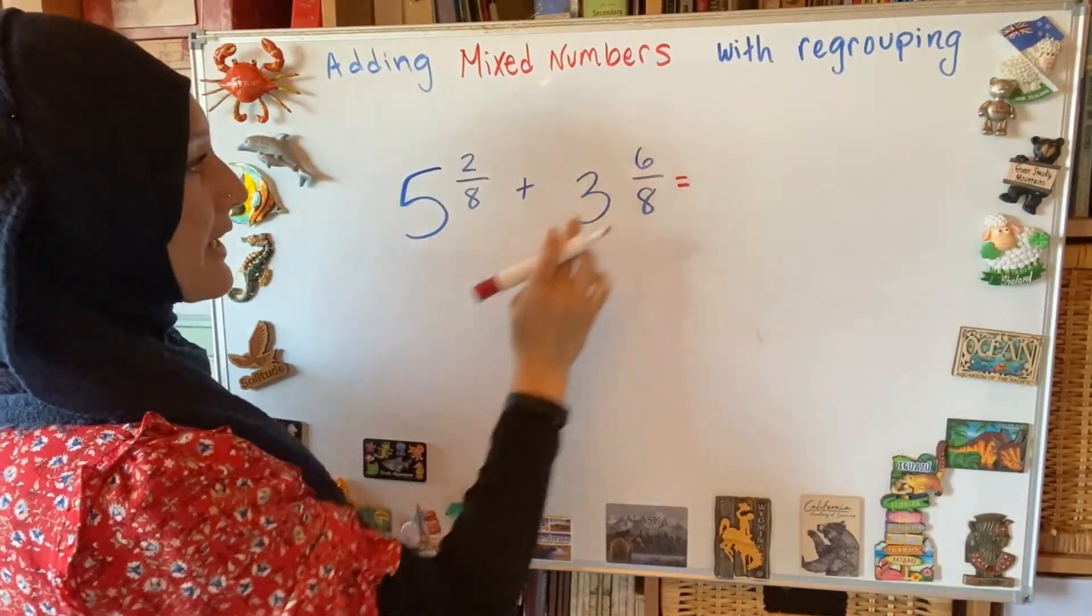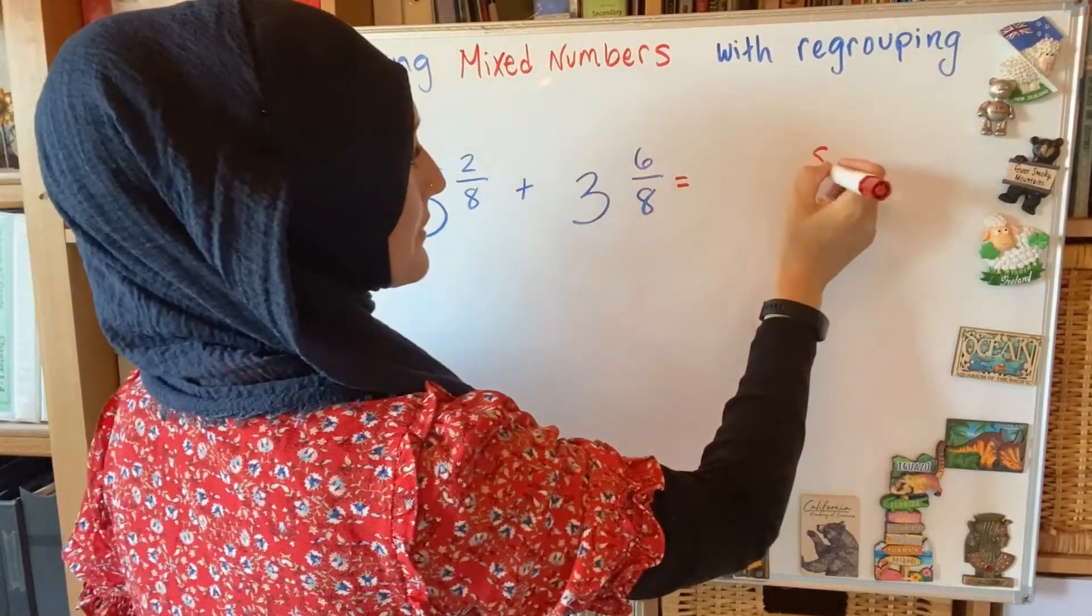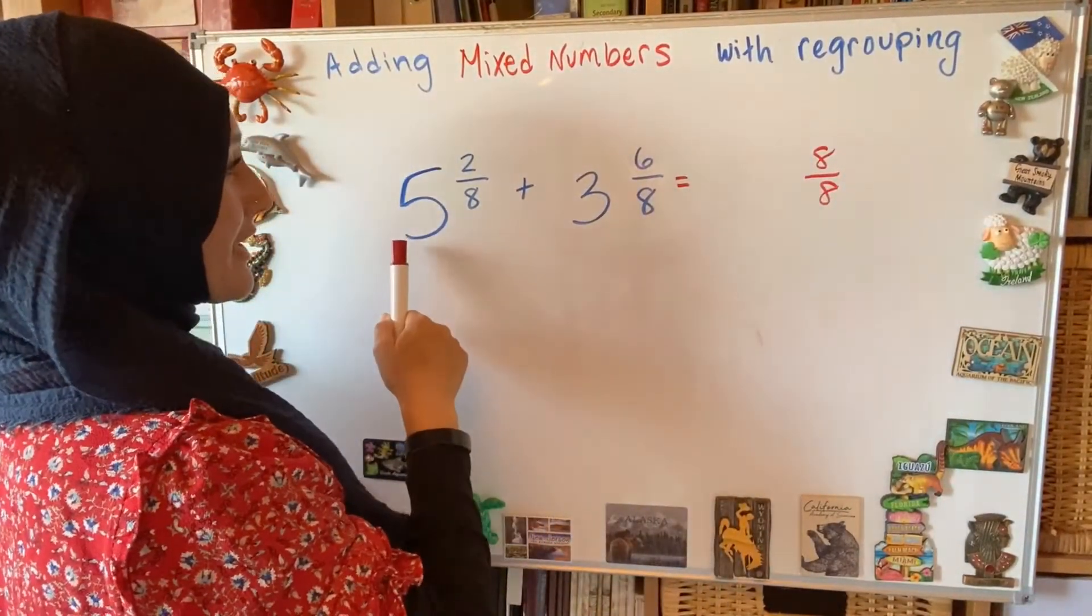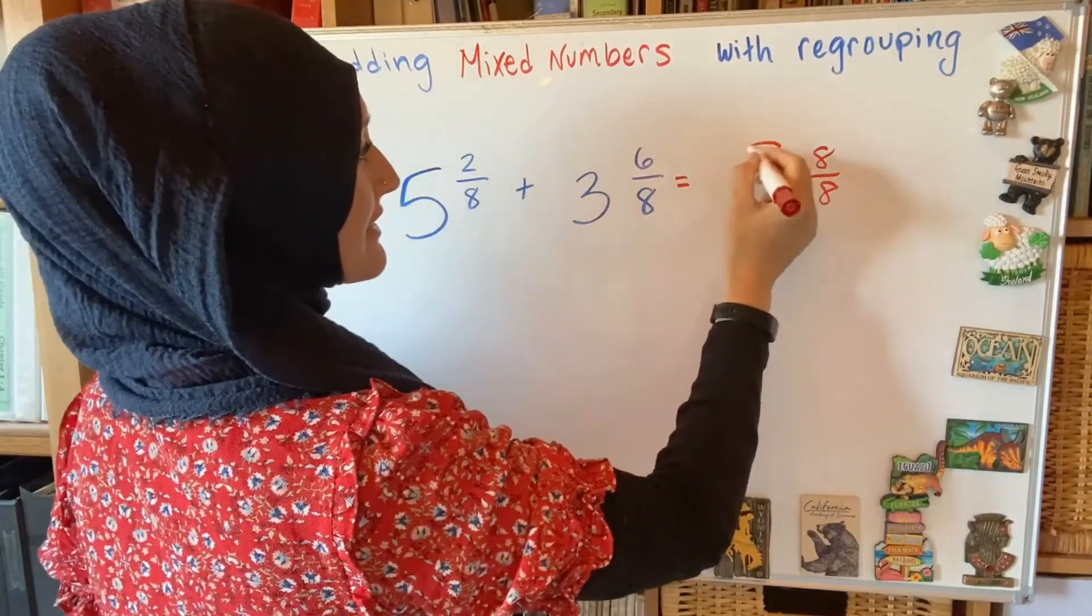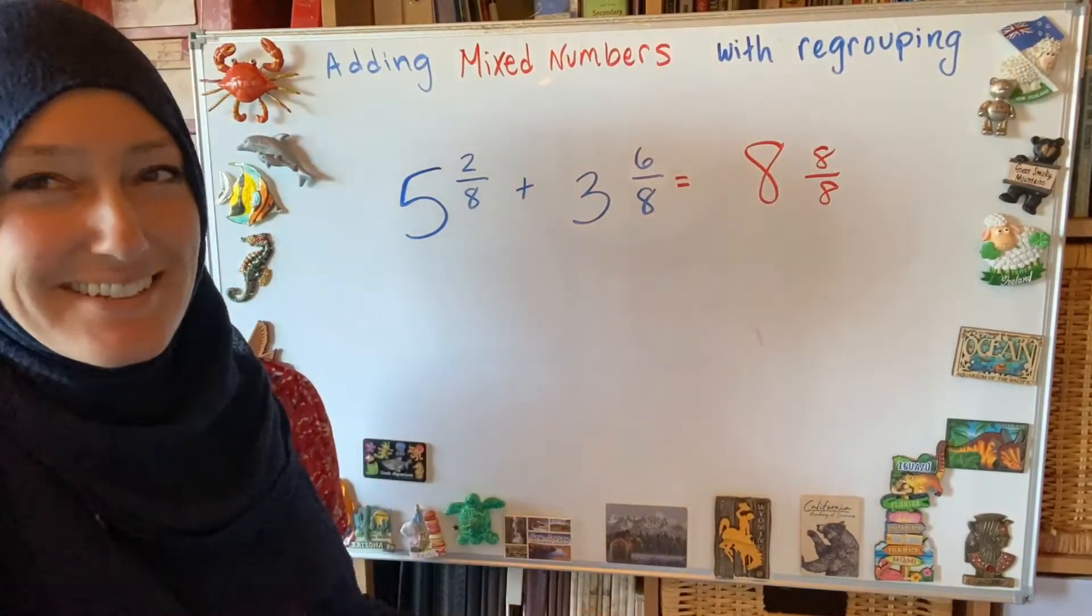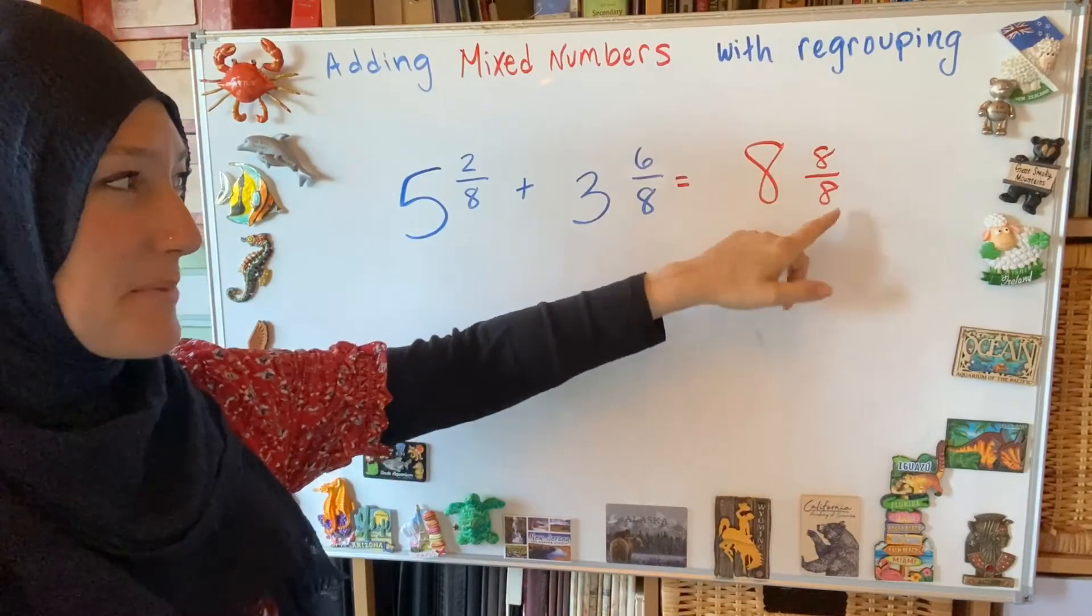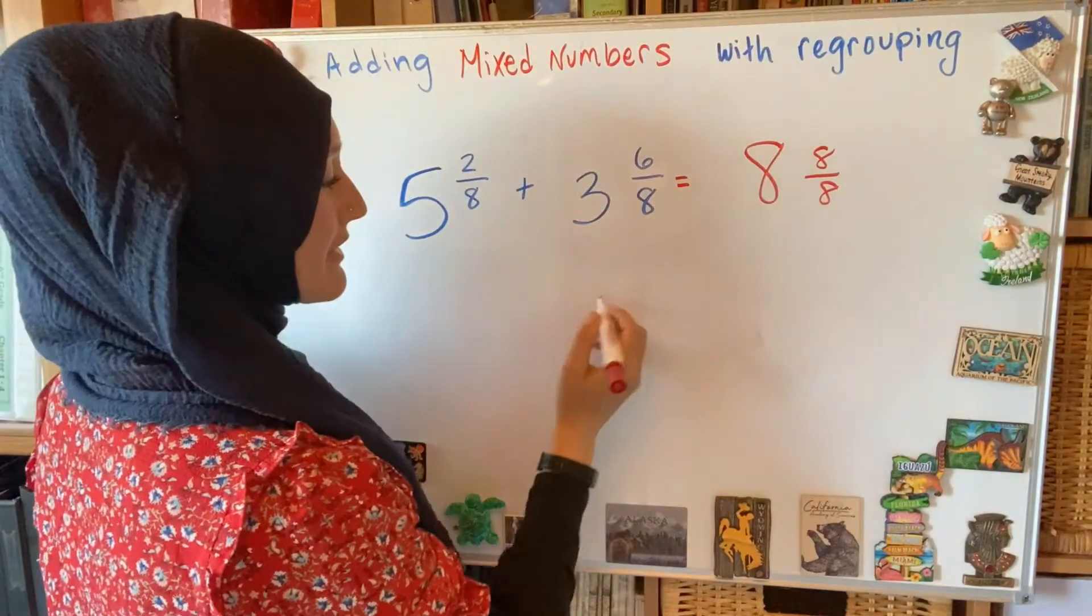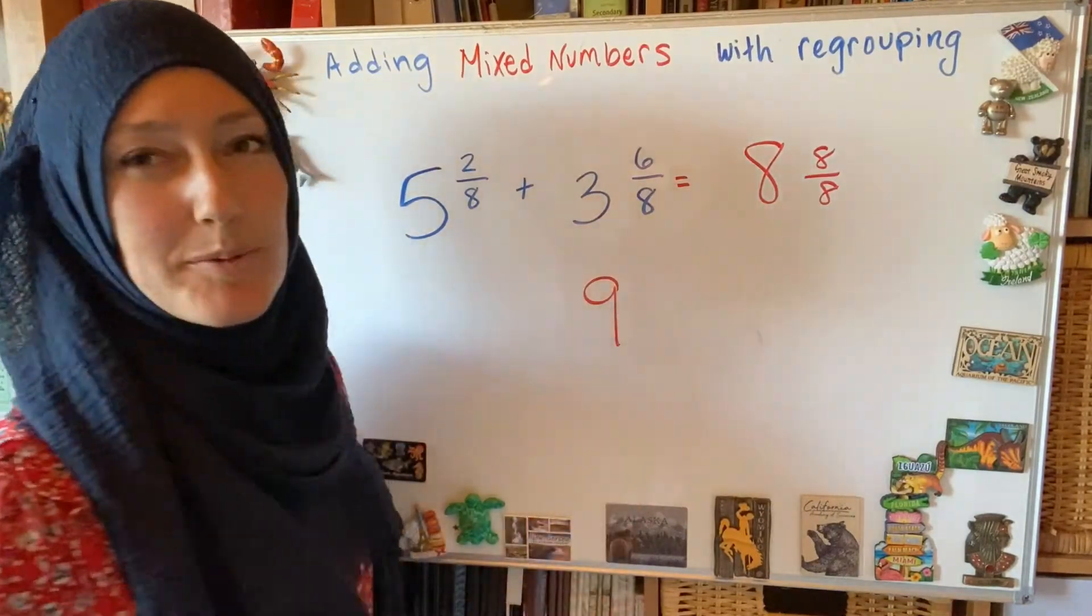Starting with the fraction, 2 eighths and 6 eighths. That's going to be 8 eighths. It's already a really big clue. 5 and 3 is 8. What is 8 and 8 eighths? I should automatically know that's already a 1. So I can just regroup that over here and my final answer will be 9.